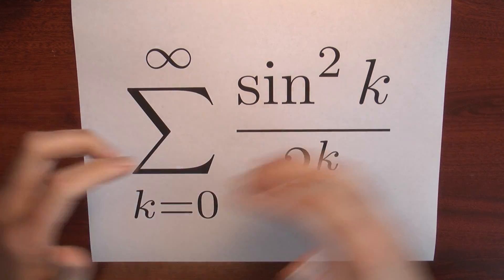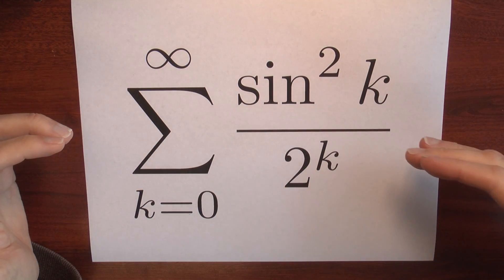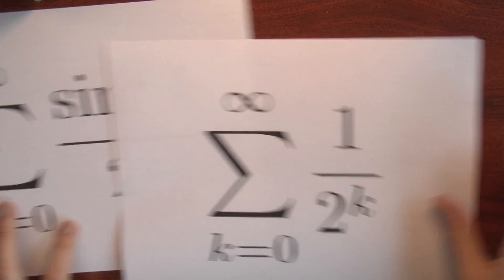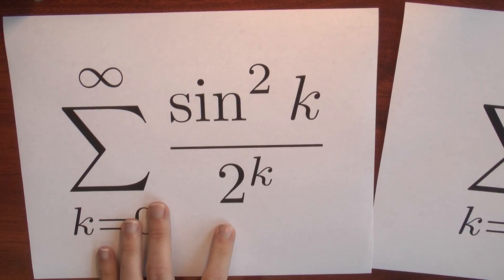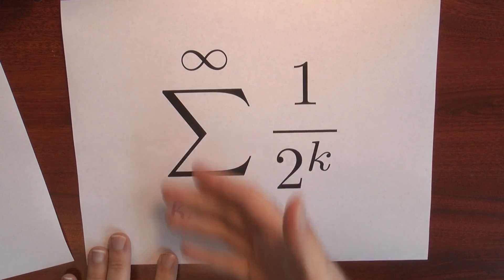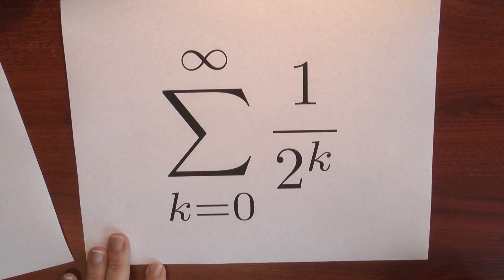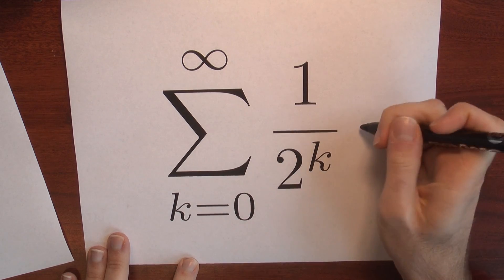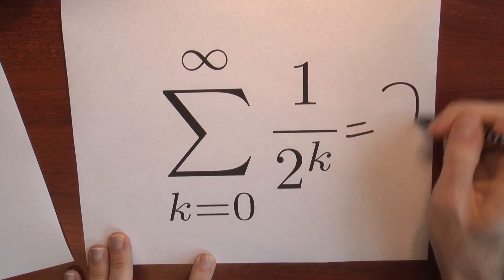Does this series diverge or converge? It looks suspiciously similar to a series that we do understand. It looks a bit like this series. If I just got rid of this sine of k squared term and replaced it with a 1, I'd have this geometric series. This series converges and its value is 2.